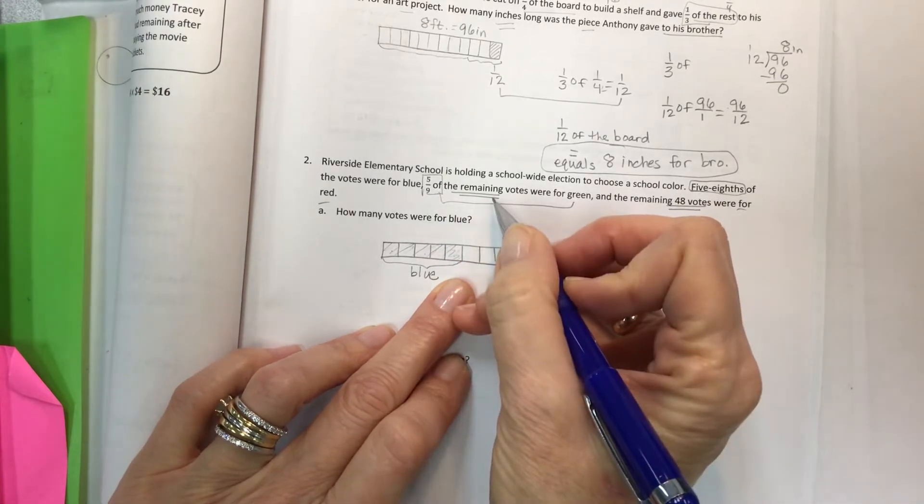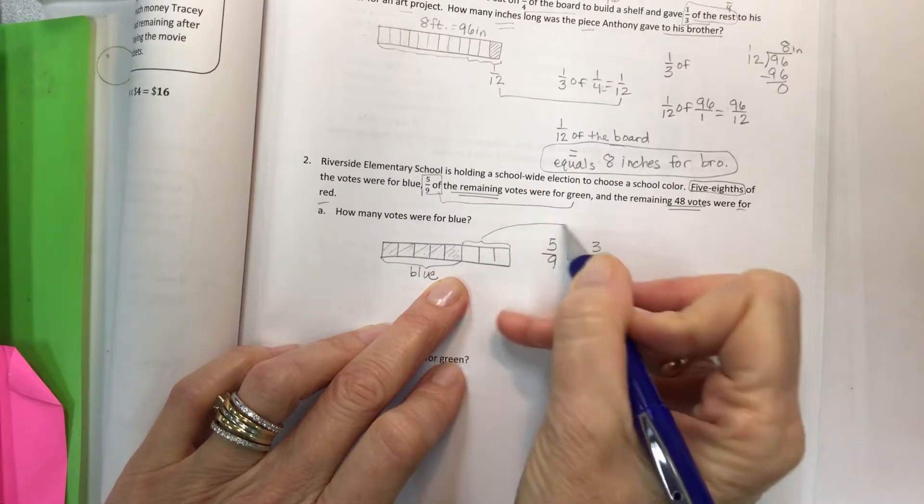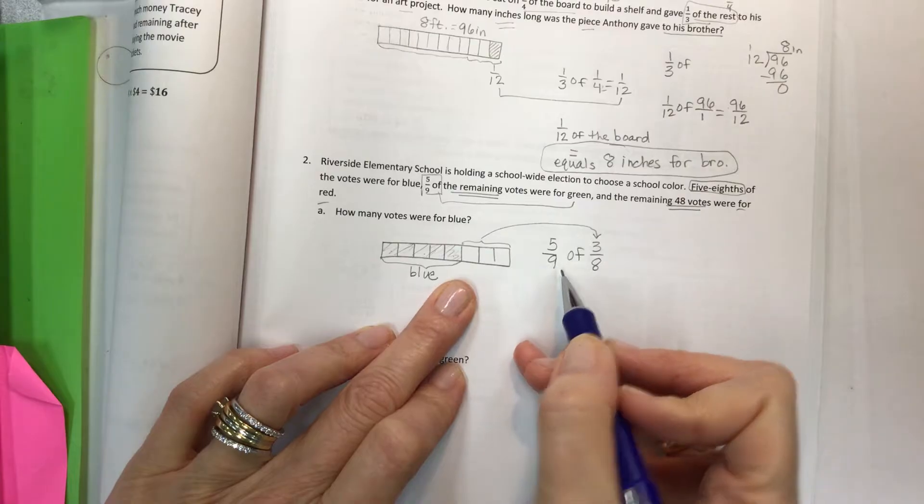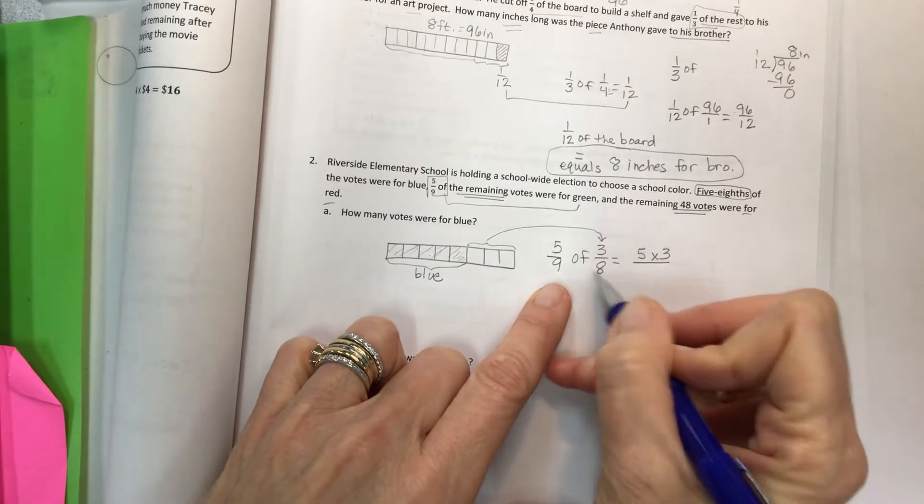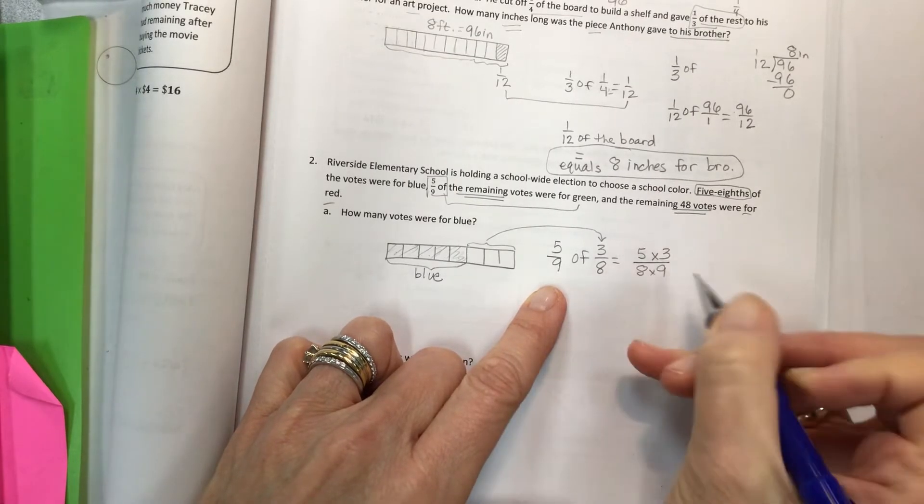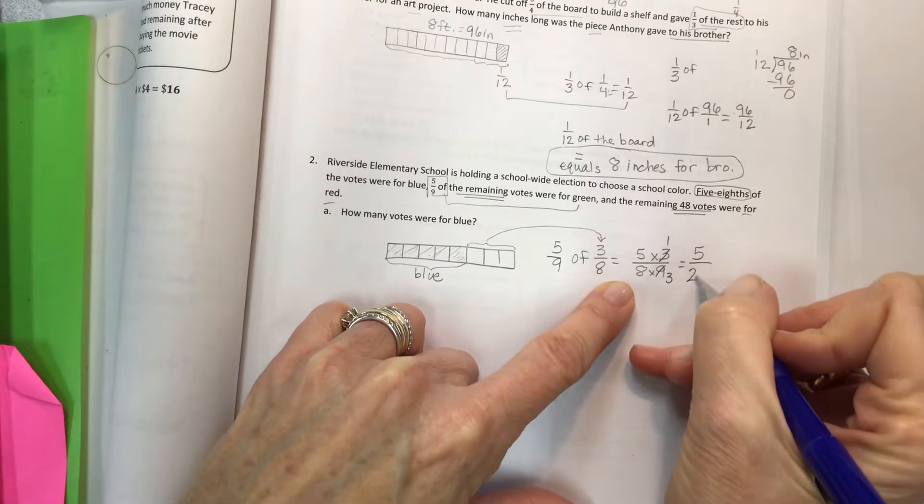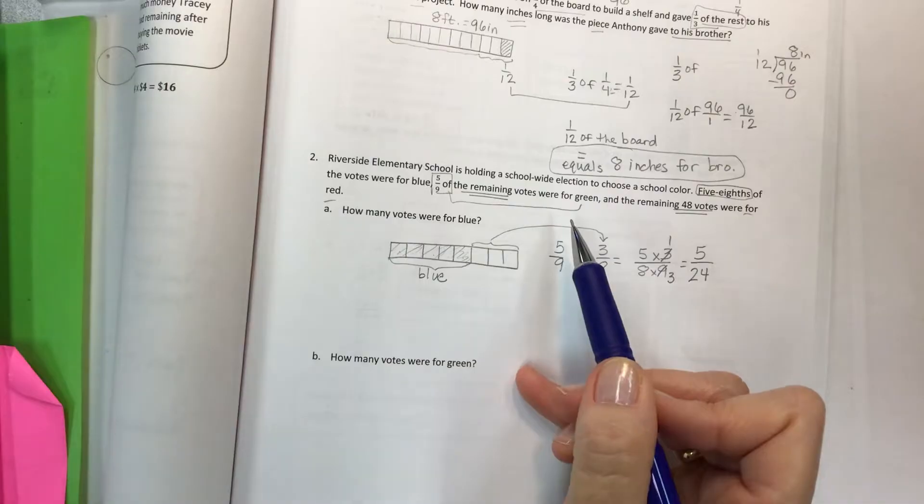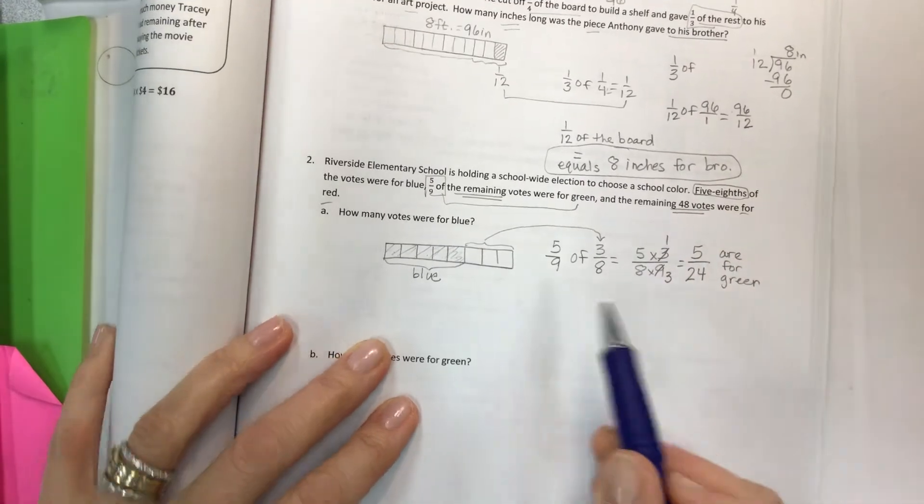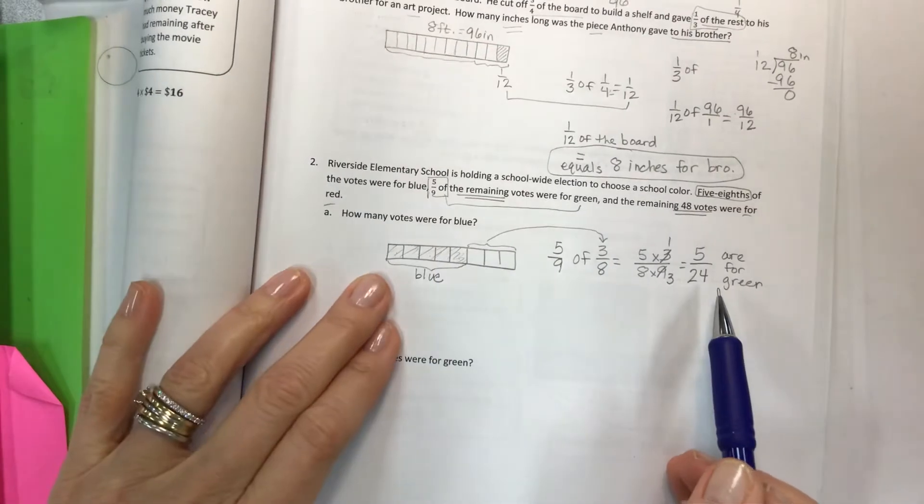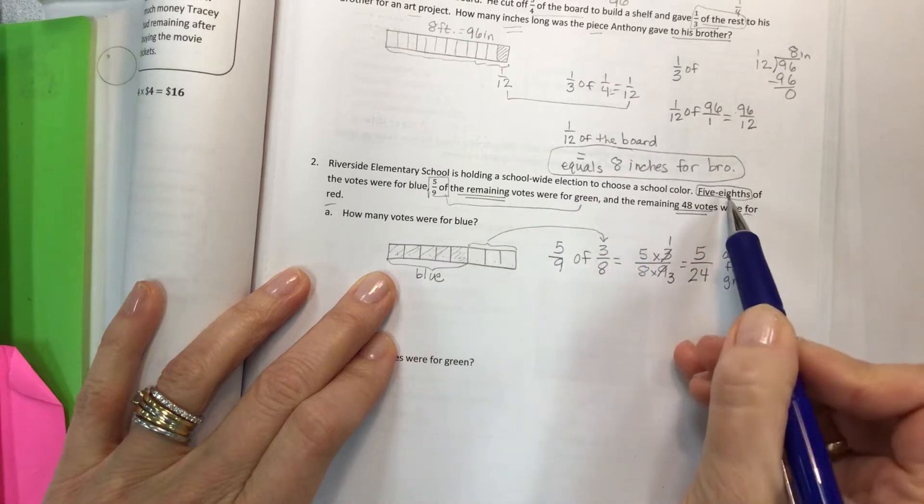So let's start with a tape diagram again. We don't have the total number of votes so we can't really label that. We're going to work our way there. We do know 48 and then we have fractional units. So five-eighths are for blue. Why don't we start out by making eighths. One, two, three, four, five, blue. Whenever you know something, just label it. Okay, so five-eighths of the votes are for blue. These are all done and kind of taken care of. So what's left is that I have three-eighths left.